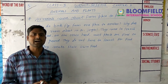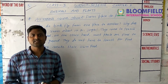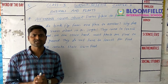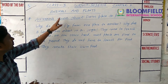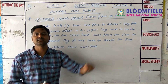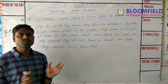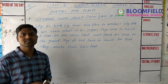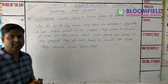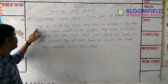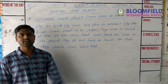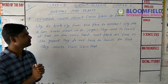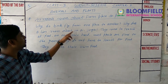Plants and Animals both are living things, but they are different from each other in many ways. The first difference is: Animals move about from place to place. Plants do not move. Why do birds fly from one place to another? Birds fly from one place to another place.